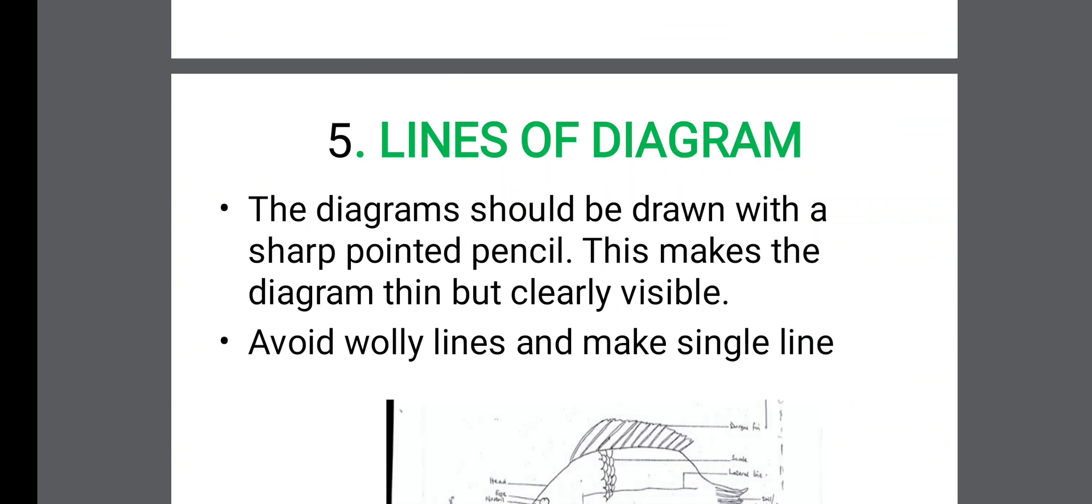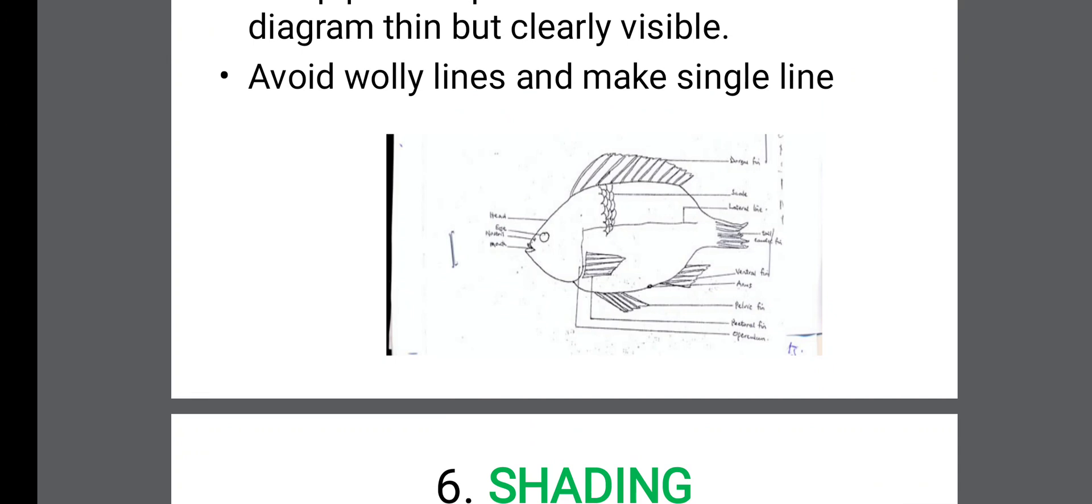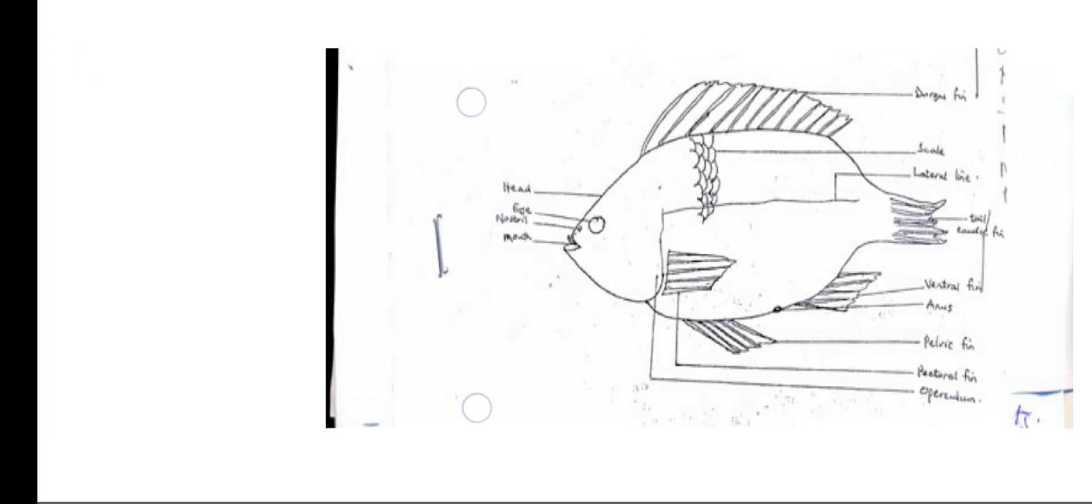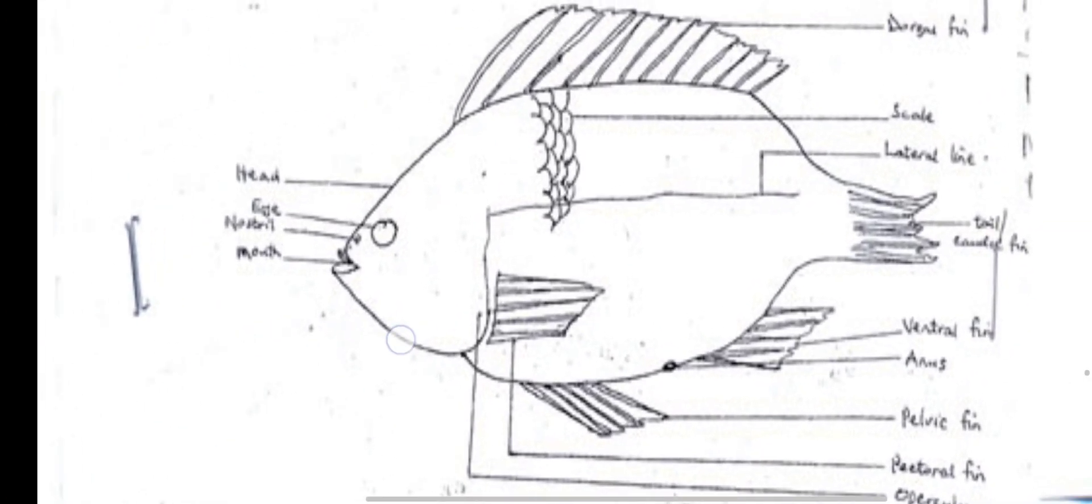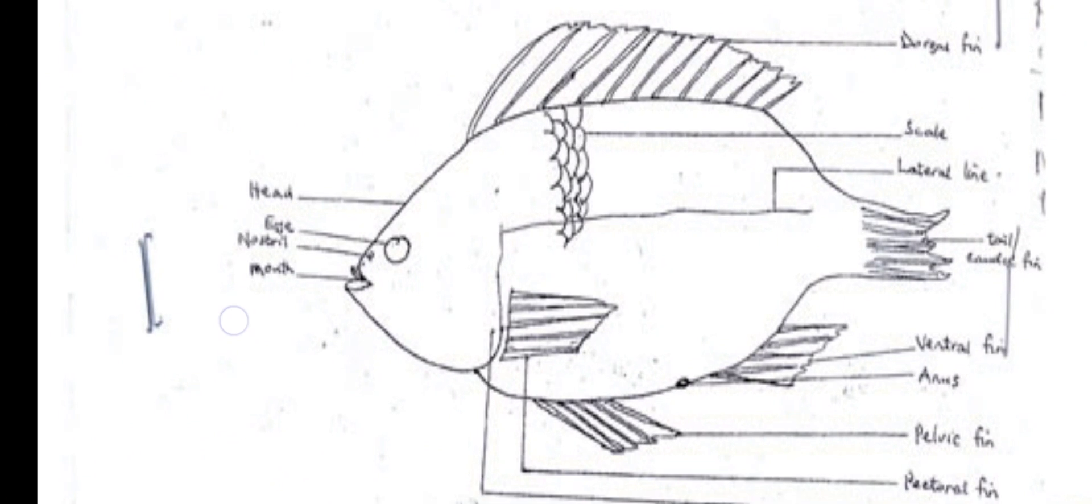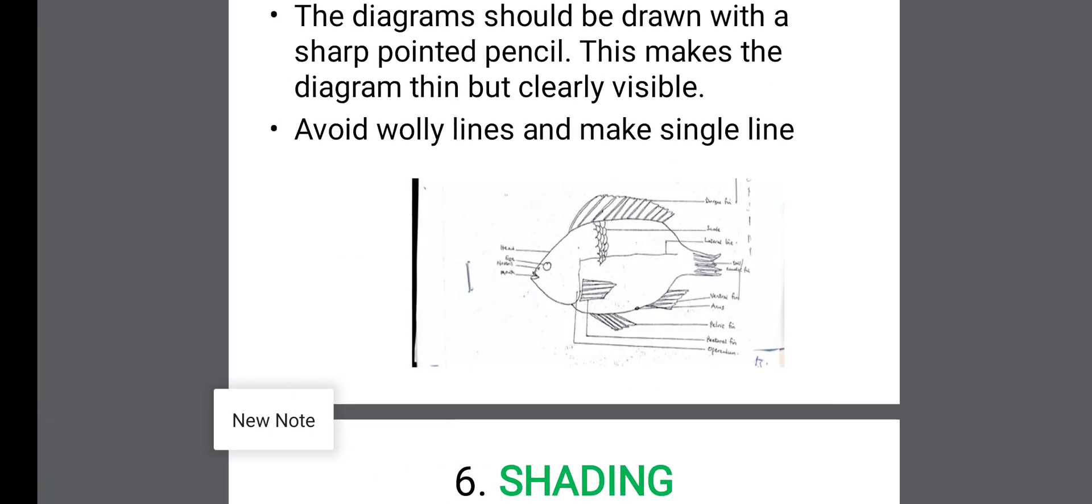Lines of a diagram. The diagram should be drawn with a sharp pointed pencil. This makes the diagram thin but clearly visible. Avoid woolly lines and make single lines. You see? Here is the student diagram of a fish, of a tilapia fish. The student tried in the sense that the line wasn't woolly.